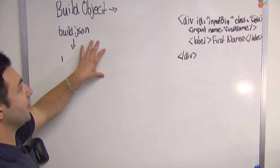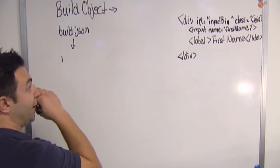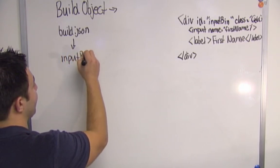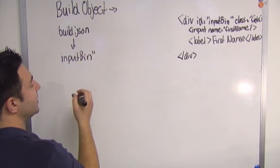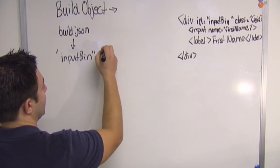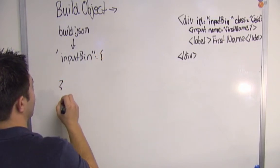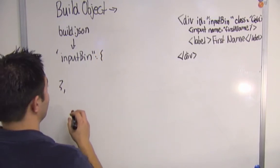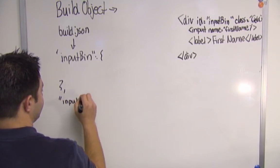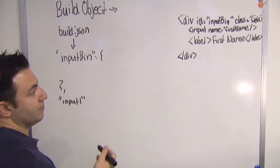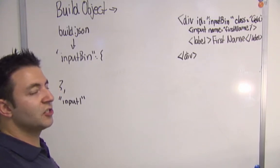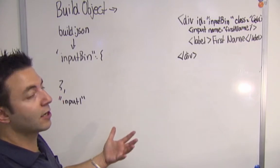But to continue, in build.json, we're going to have a build object called input bin. And since it's JSON, I'm going to use quotes. And then we're going to have input, I'm going to call it input1. Input1, in this case, represents a build object that I've created that's kind of a generic input field, and the same is going to go for label.